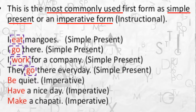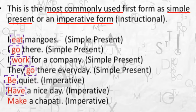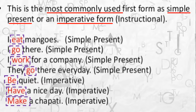Base forms are also used in the imperative form. For example, 'Be quiet' — you are instructing someone not to say anything. 'Have a nice day' — it is a kind of wish you are making for someone. 'Make a chapati' — a request or instruction. So these are all examples of the base form of the verb. That is our first point covered.